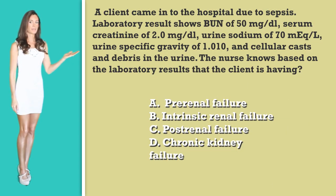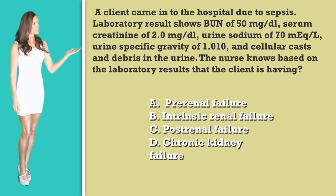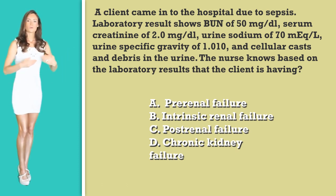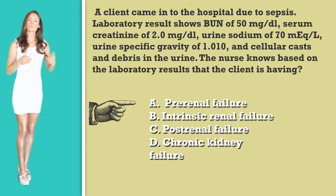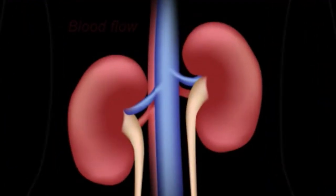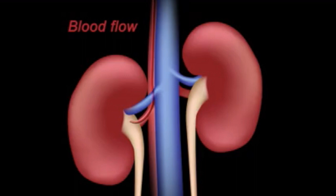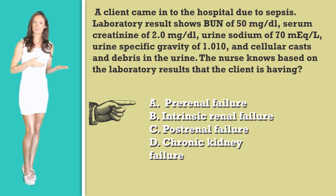Option A: pre-renal failure. Option B: intrinsic renal failure. Option C: post-renal failure. Or option D: chronic renal failure. With this question, they are giving us specific lab values to help indicate where the patient's acute renal failure is originating from. In option A, pre-renal, we learned in the content video that this is caused by fluctuations in flow to the kidneys. Once you understand the lab values given in the question, you will see this is not the correct answer.